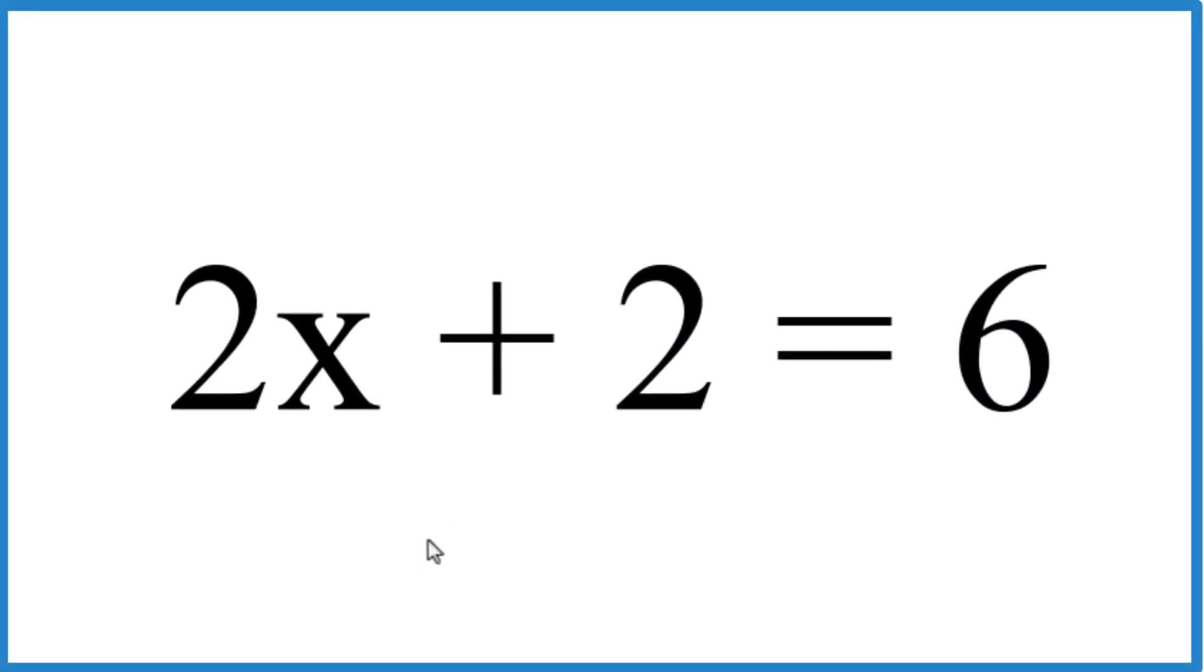All right. So let's solve for x in the equation 2x plus 2 equals 6. What we're doing, we're trying to find a value for x that when we multiply 2 times that value plus 2, it equals 6. So we'll use algebra to do that.